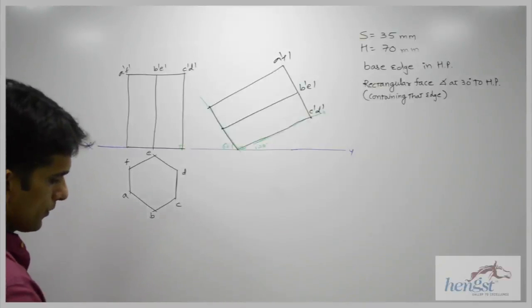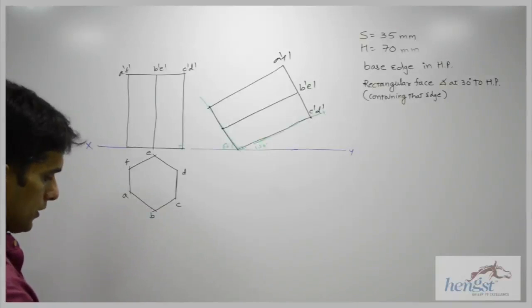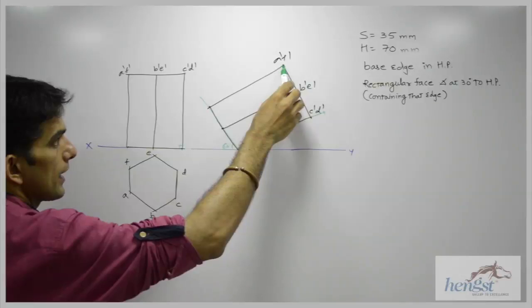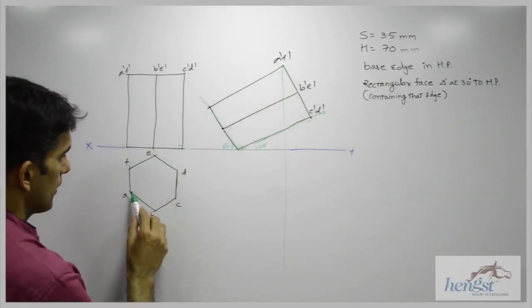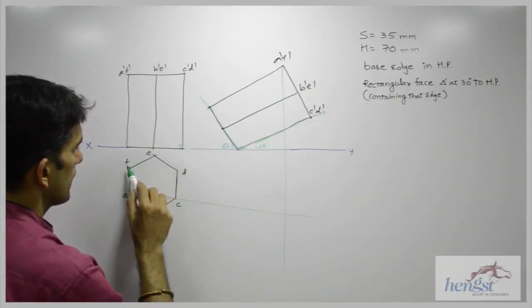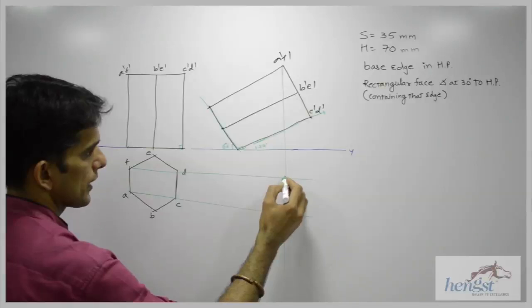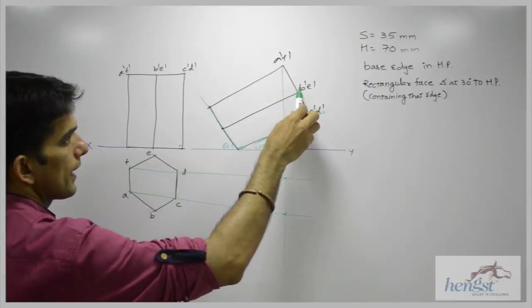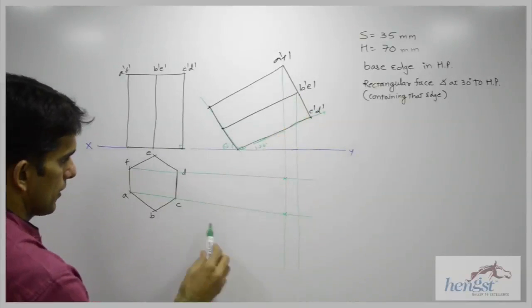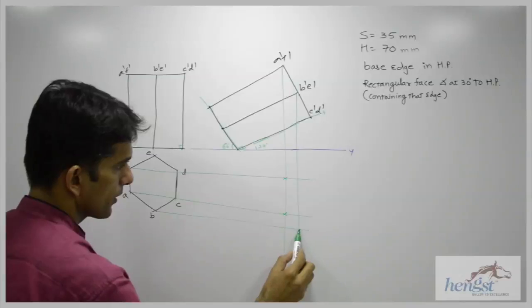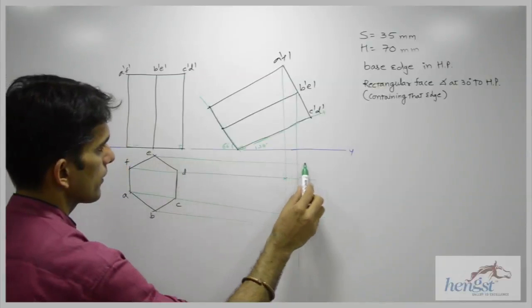After that, we need to project this point down. So I will extend a dash, f dash from here, and e and f from here. So I will get two points. Then I will extend b dash, e dash, d from here, e from here.